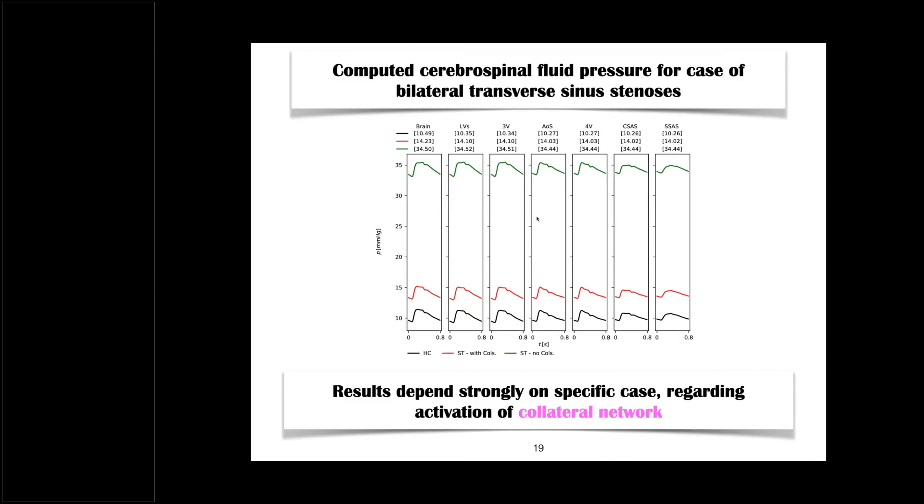Now, let's see more in detail what happens in the brain. This is the CSF in the brain. And so, we have here, this is the cardiac cycle here. So, this is time-dependent information within the cardiac cycle, not average value within the cardiac cycle. So, this is the curve for the healthy control here, the black here. This is the level. And we have an average of 10.49 for that case here. But when we have then strictures, then we have an average of 14.23, and you can see the time-dependent curve here. This is with fully active collaterals. With no active collaterals, you have 34.5, and you have a time-dependent curve.